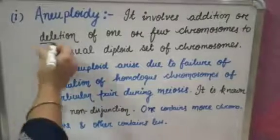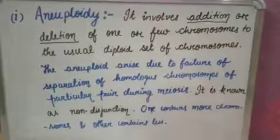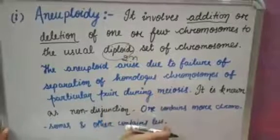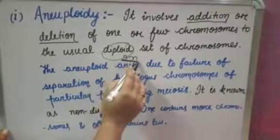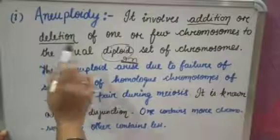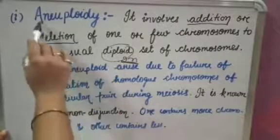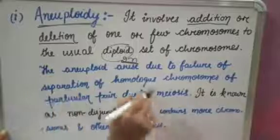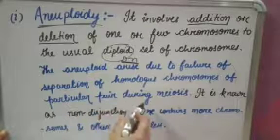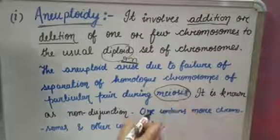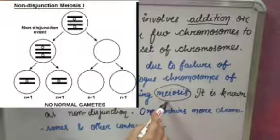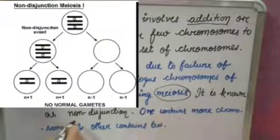Aneuploidy involves the addition or deletion of one or a few chromosomes from the normal 2n number. Some chromosomes are added or deleted from the diploid set. Aneuploidy arises due to the failure of separation of homologous chromosomes — a particular pair — during meiosis.